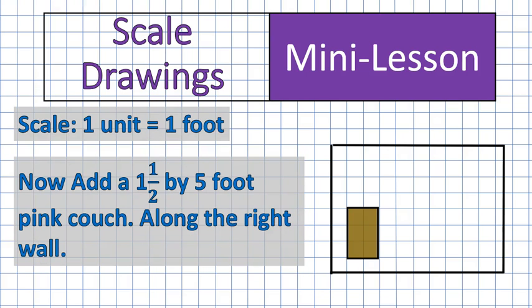Next, I want to add a one and a half foot by five foot pink couch along the right wall. There we go. And I even centered this one on the wall, which means it doesn't line up exactly with the lines, but that's okay. It's five feet, so it'll have one and a half feet on either side. It's one and a half feet by five feet. That's my pink couch.